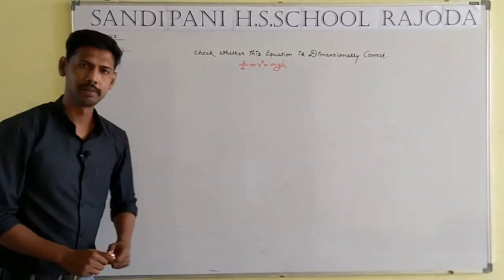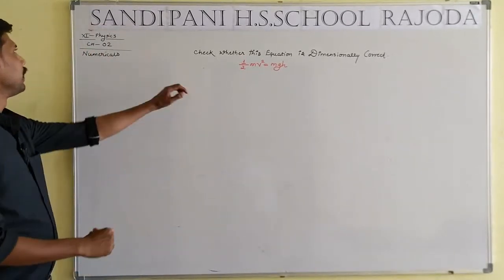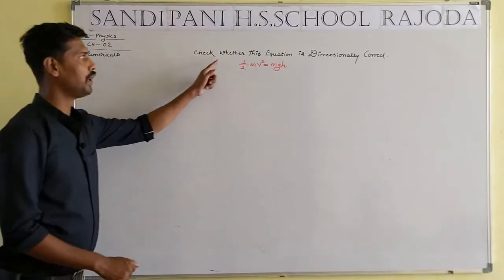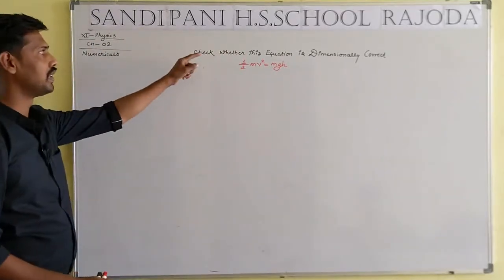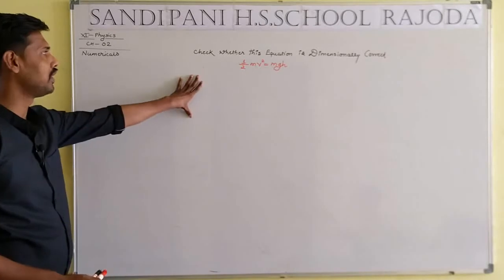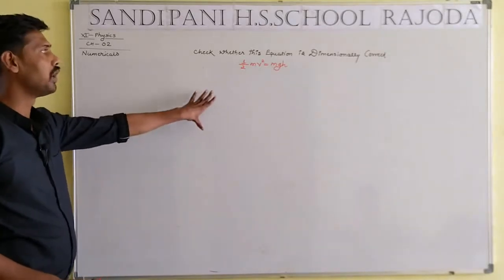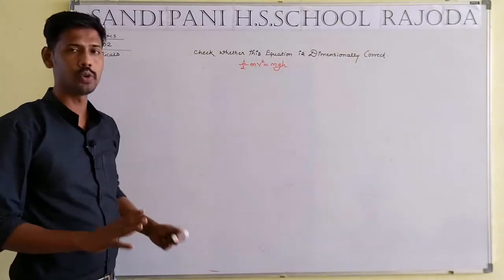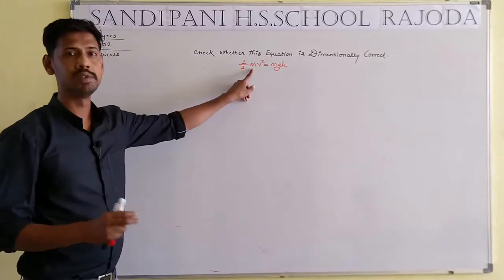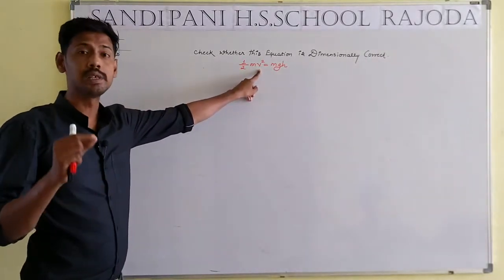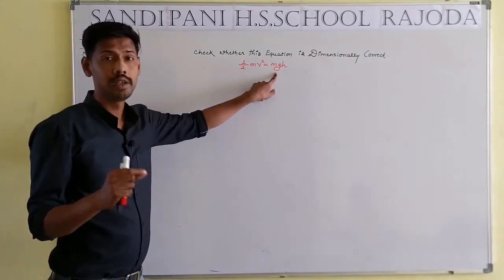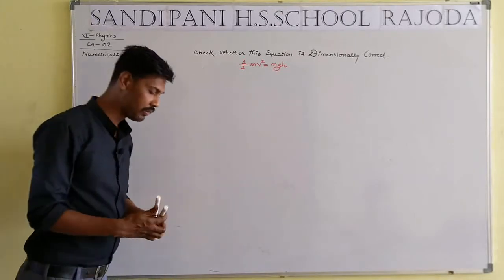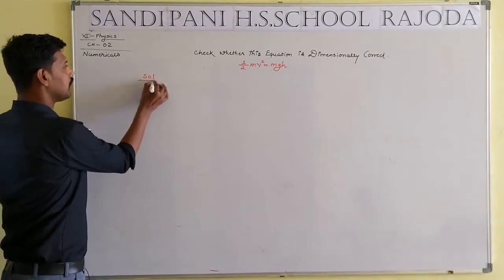Good morning students. I am Asim Kumar Mandal, a physics teacher. We are taking numericals from Chapter 2, Class 11 Physics. The question asks: check whether the equation 1/2 mv² = mgh is dimensionally correct or not. Here, m is mass, v is velocity, g is acceleration due to gravity, and h is height.